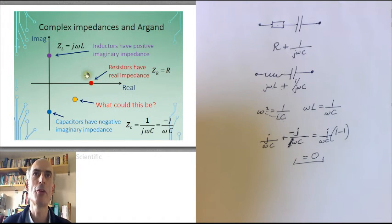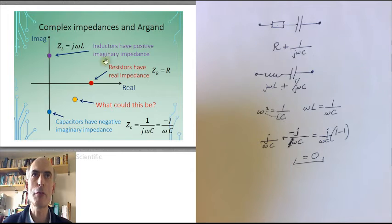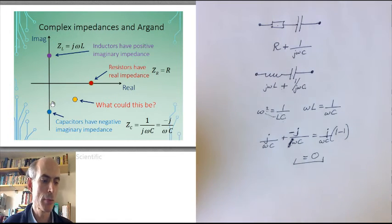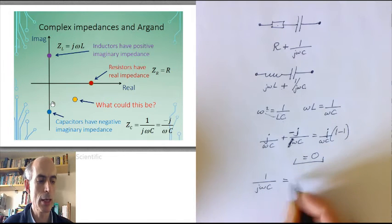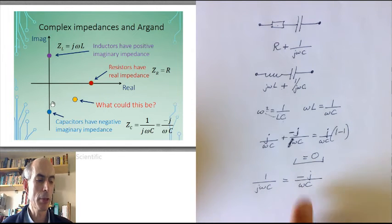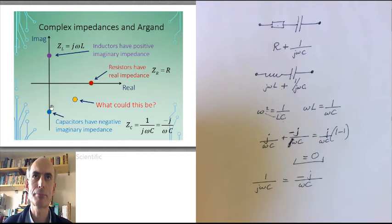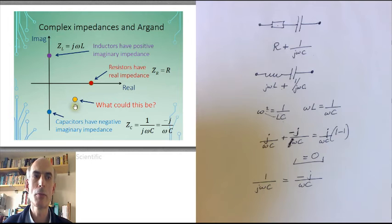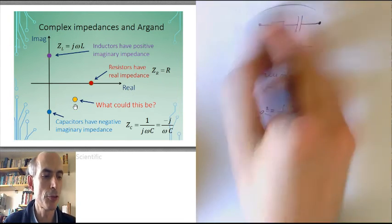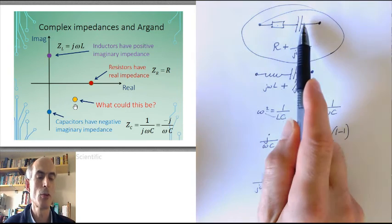You can plot these complex impedances on an Argand diagram. Resistors have a perfectly real impedance, so they appear somewhere on the positive real axis. Inductors have a positive imaginary impedance, so they appear on the positive imaginary axis. Capacitors have a negative imaginary impedance, because 1 over jωC can always be written as −j over ωC. A component with a complex impedance having both real and negative imaginary parts — such as a resistor in series with a capacitor — would appear in the fourth quadrant of the Argand diagram.